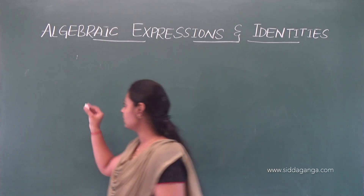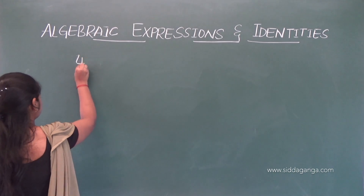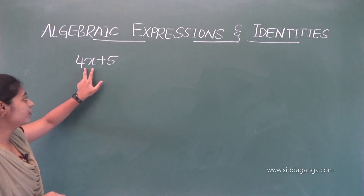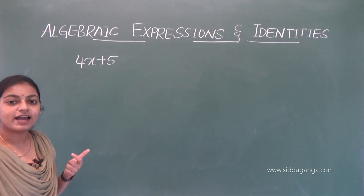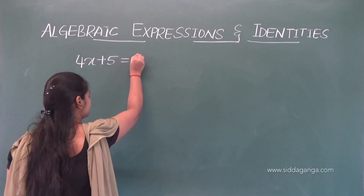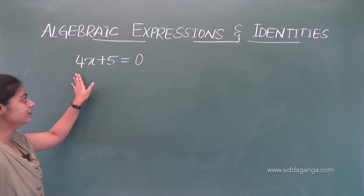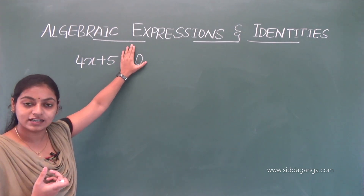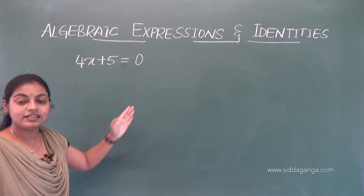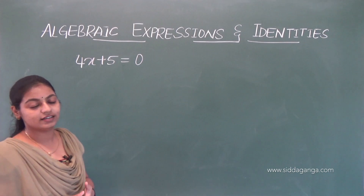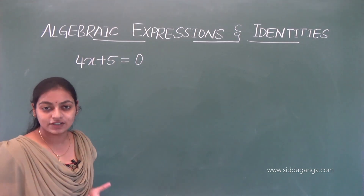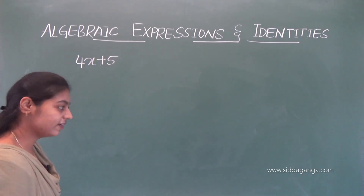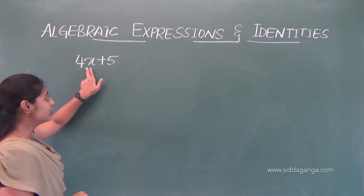So what are equations and expressions? Consider an example 4x plus 5. So 4x plus 5 is an expression. If we add an equality sign to this expression, that is equals to 0, then we call it as an equation.